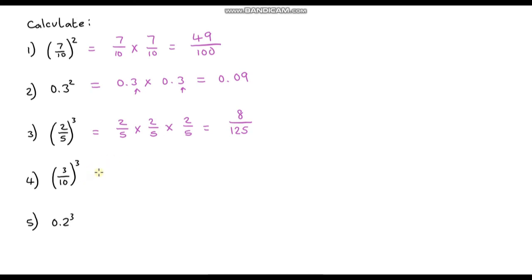Okay question 4, three-tenths cubed. So that's going to be three-tenths multiplied by three-tenths multiplied by three-tenths. So 3 times 3 times 3, well that gives us 27. And 10 times 10 times 10 is 1,000. So it's 27 one-thousandths.